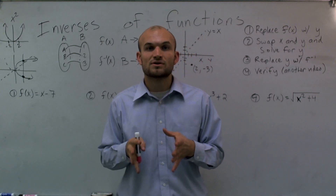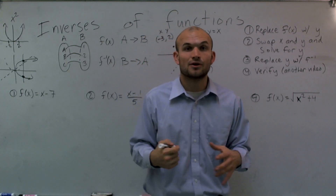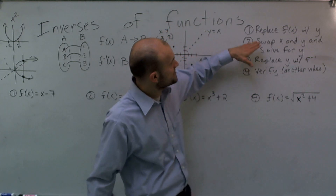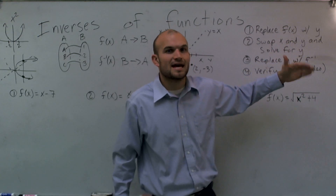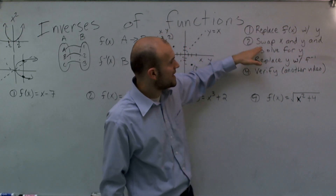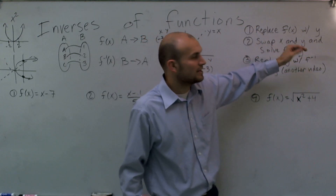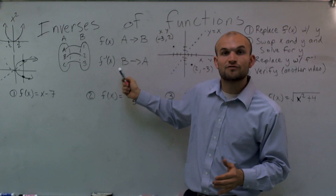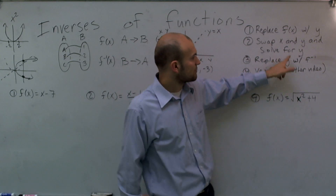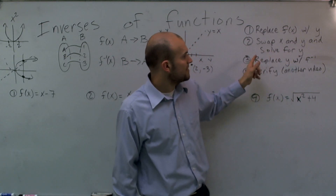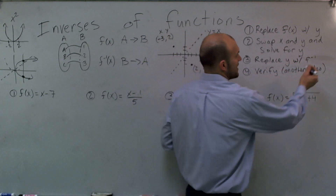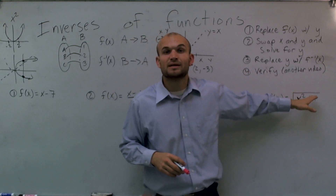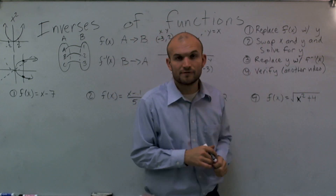Now I'm going to give you three steps to follow to find the inverse for any function. Step one: replace your f(x) with y — this just helps us algebraically do our work. Step two: swap our x and y — this is just like mapping from B to A instead of A to B. Step three: solve for y. Then replace your y with f inverse of x. We'll cover verification in another video.